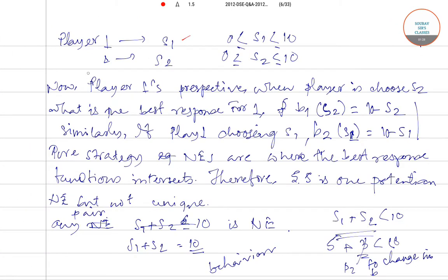Let us say that player 1 chooses S1 and player 2 chooses S2, and S1 lies between 0 to 10 and S2 also lies between 0 to 10. So from player 1's perspective, when player 2 chooses S2, what is the best response for player 1? It is B1 when player 2 is choosing S2 equals to 10 minus S2. If he is choosing S2, then the best response for me is to choose 10 minus S2.